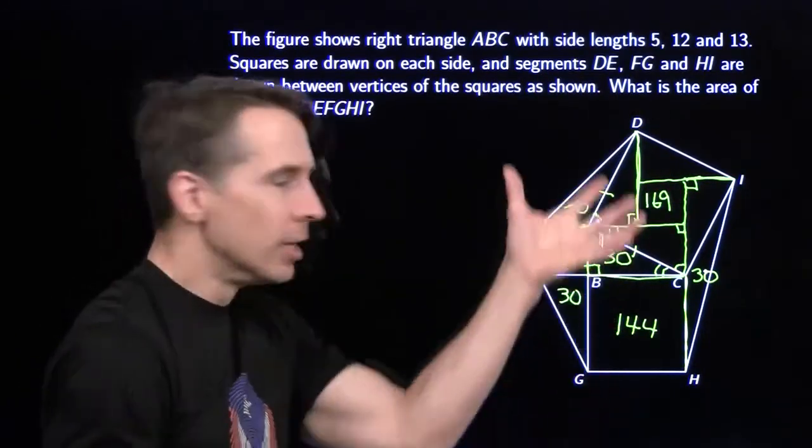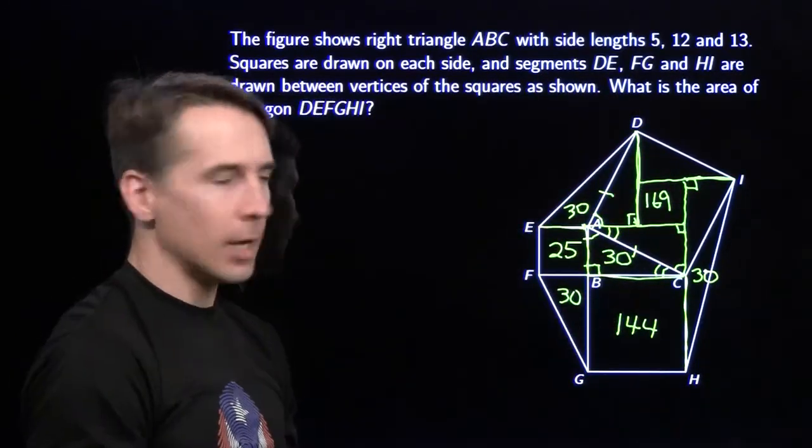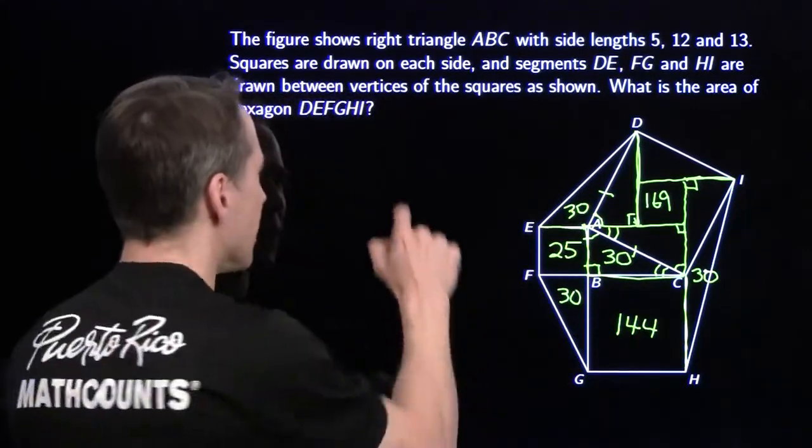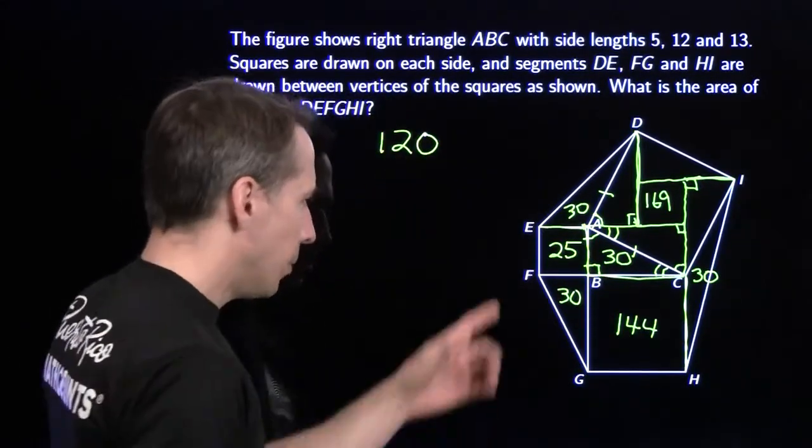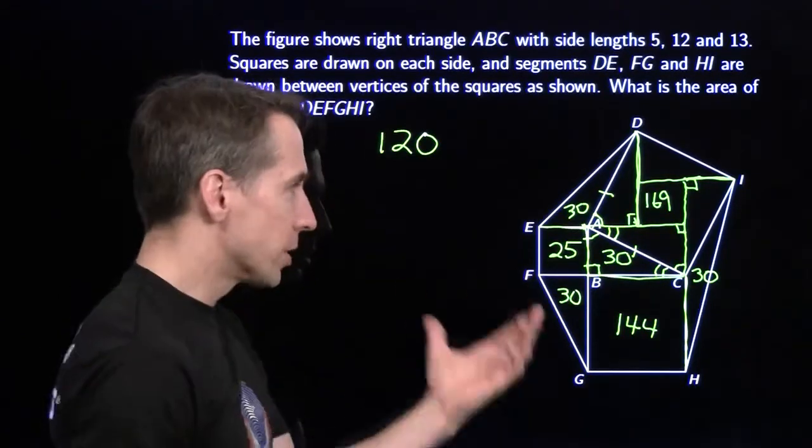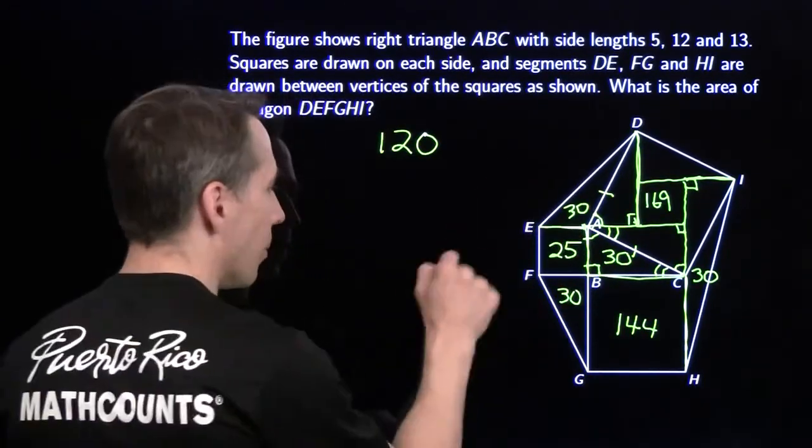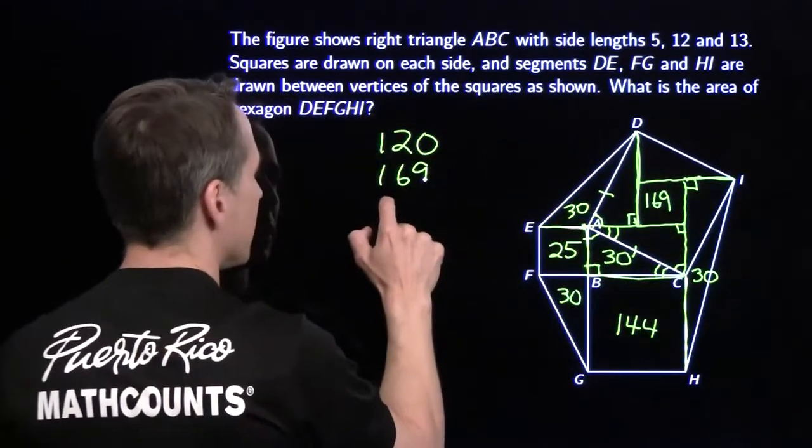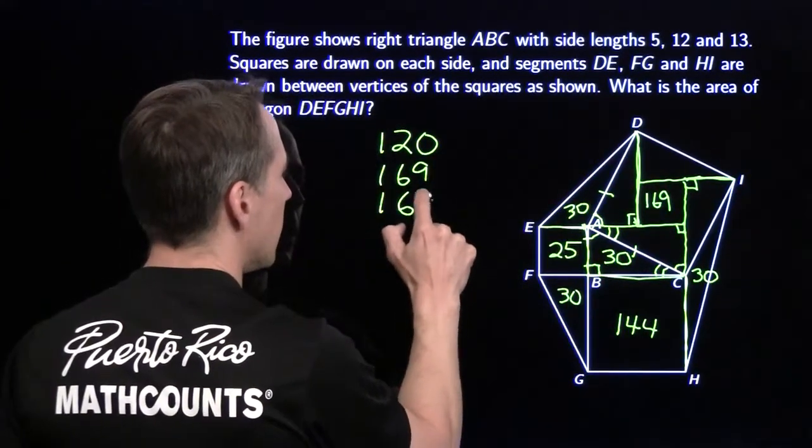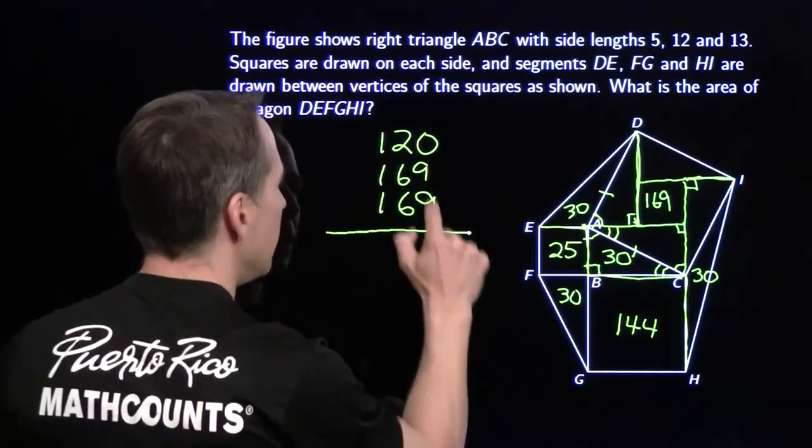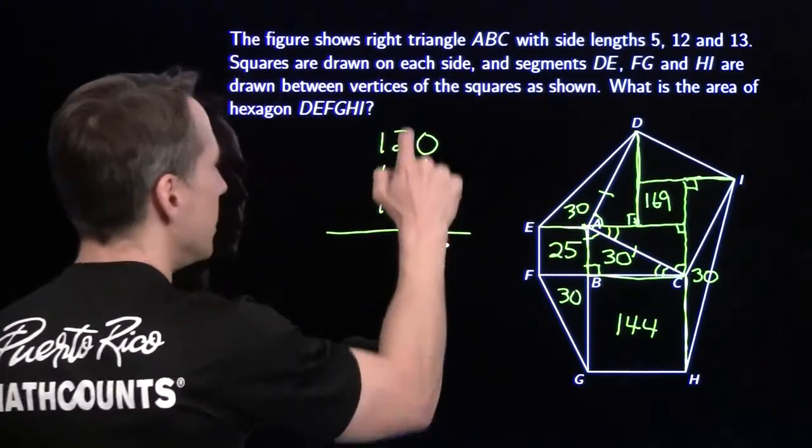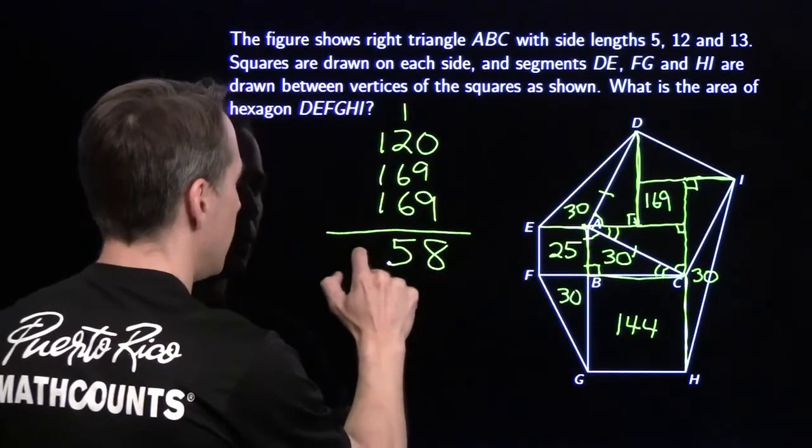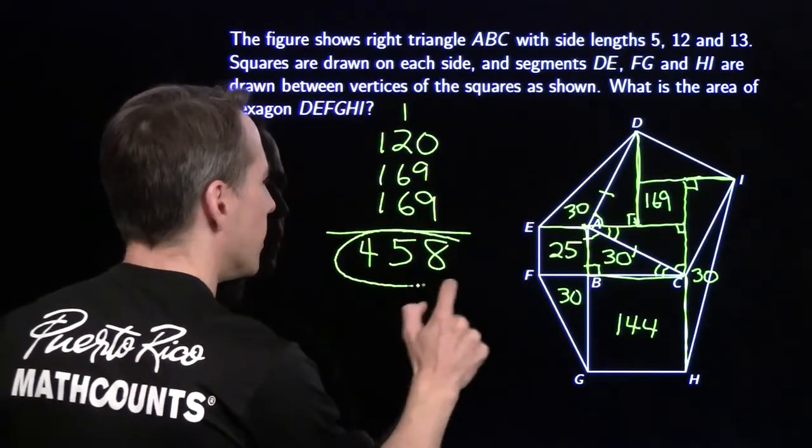We want the area of the whole hexagon. So we just have to add all of these up. Let's see. I've got 1, 2, 3, 4. 4 30s. That's 120. And then my 25 and 144 is going to give me 169. That's our Pythagorean theorem right there, 169. And then I have another 169 out here. And let's just add these up. This gives me 8, carry a 1, 5, and then this is a 4. Our area is 458.